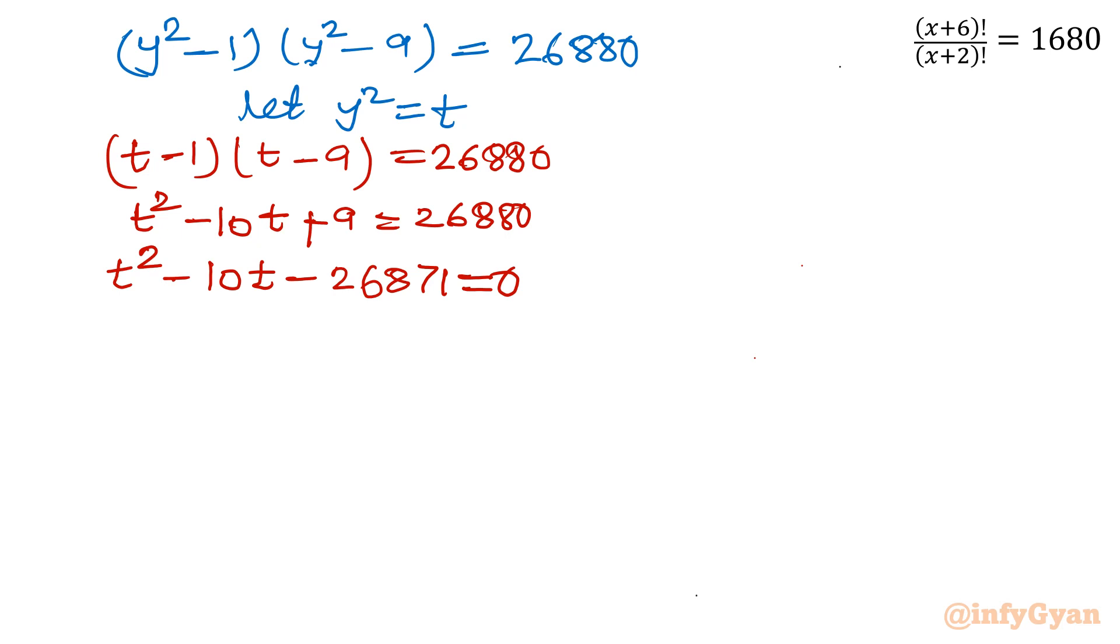This is one quadratic equation. If you will go for quadratic formula that would be very tedious. Because b² minus 4ac, 4 times 26,000, that would be big number. So to avoid that we will find out factors directly. So if you will find factors of 26,871, it would be 159 times 169. You can check.